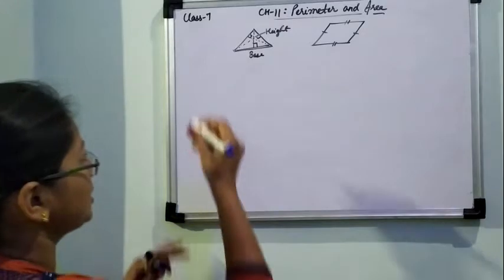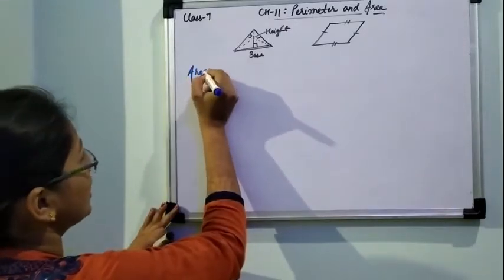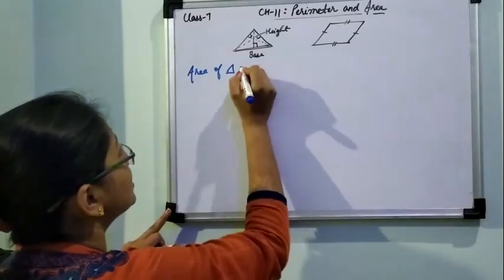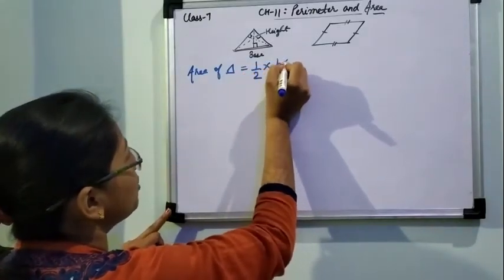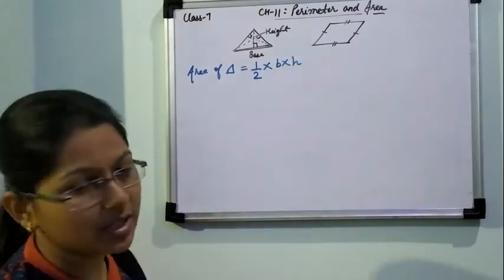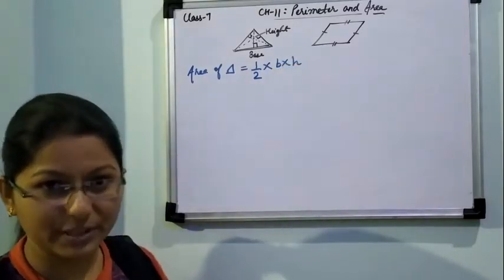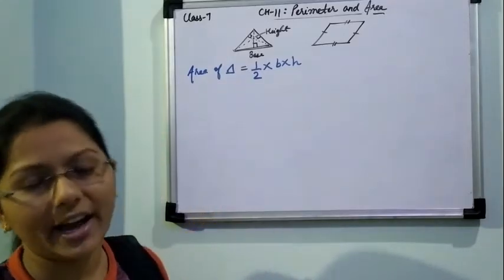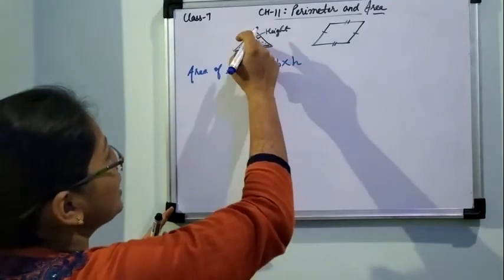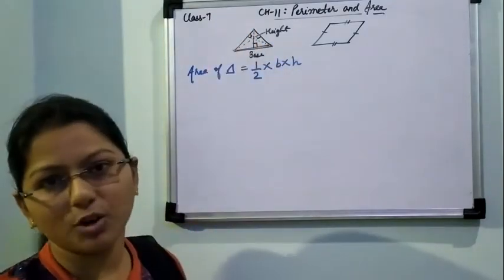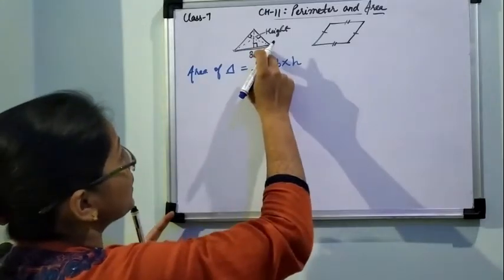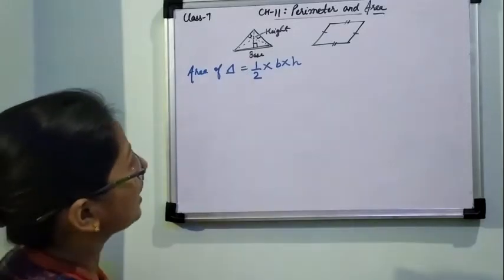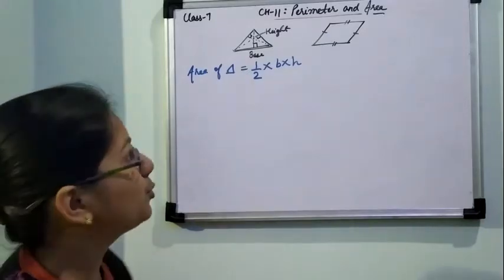For area, let's look at the formula. Area of triangle — I am denoting the triangle with its symbol. Area of triangle is equal to half into base into height. To find the area of any triangle, you must know its base and the height related to that same base. It is not possible if the base and height are from different sides. If this is the base, the height must come from its opposite vertex. So area of triangle is equal to half into base into height.